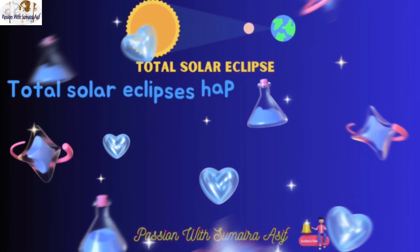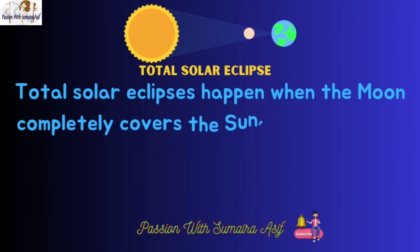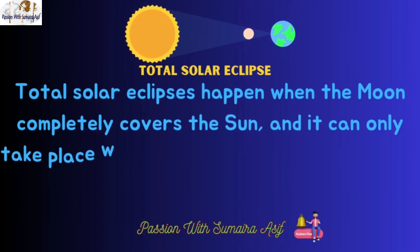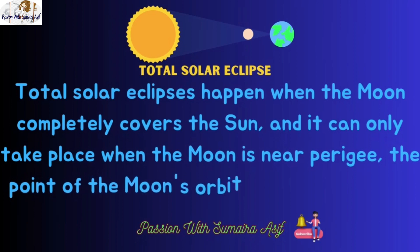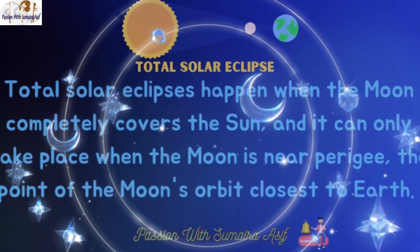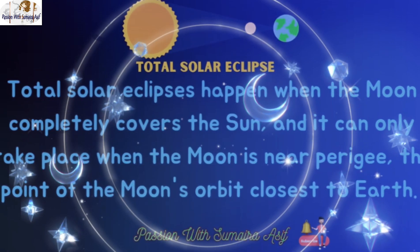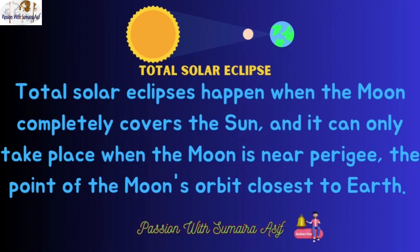A total solar eclipse happens when the moon completely covers the sun, and it can only take place when the moon is near Perigee, the point of the moon's orbit closest to the earth.